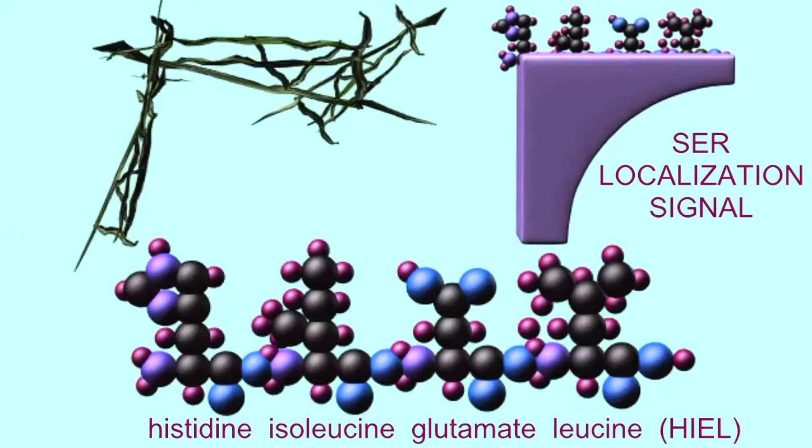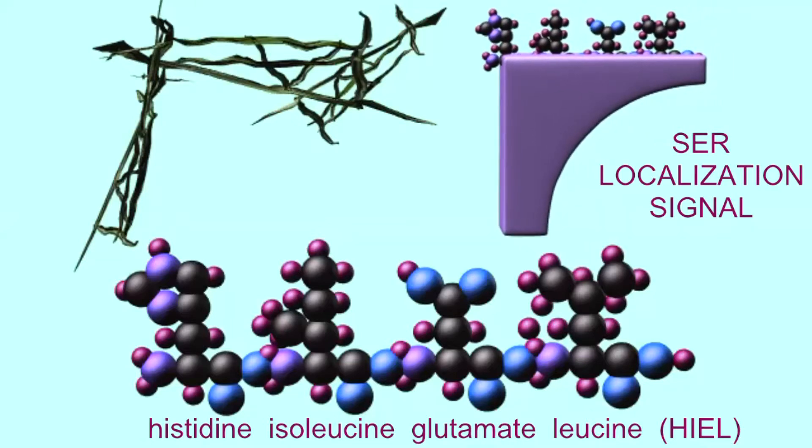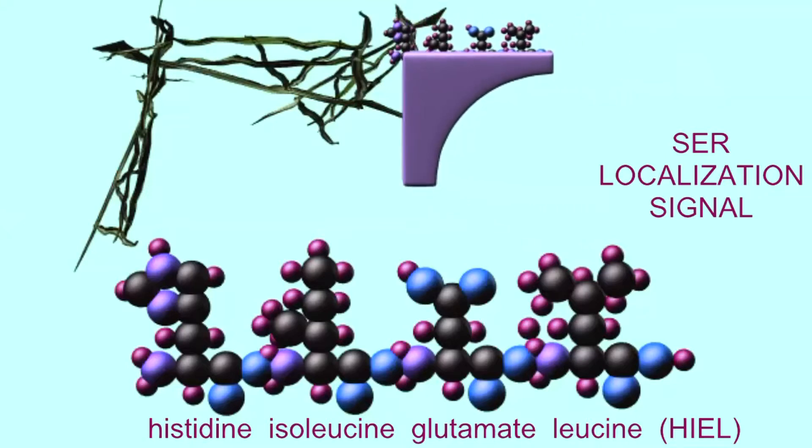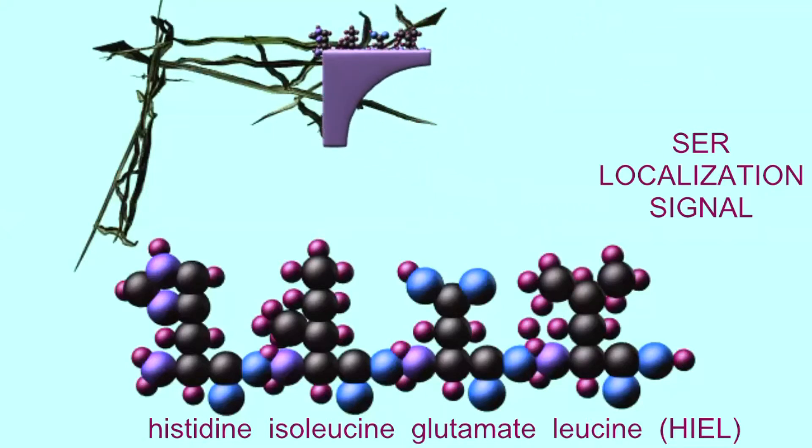Proteins can be targeted for transport to the peripheral SER by possessing the four amino acid sequence HIEL, or histidine, isoleucine, glutamate, and leucine.